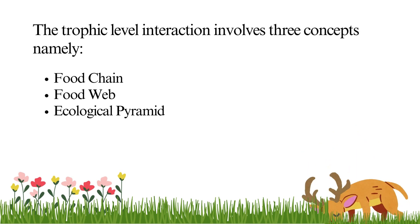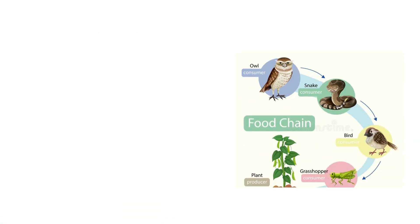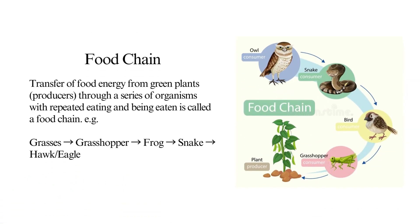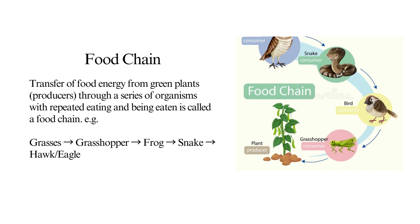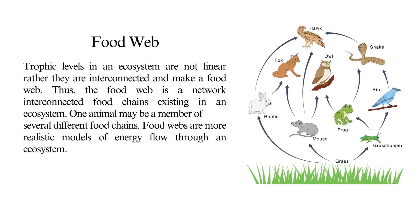The trophic level interaction involves three concepts: food chain, food web, and ecological pyramid. Food chain: transfer of food energy from green plants through a series of organisms with repeated eating and being eaten is called a food chain. For example, grasses are eaten by grasshopper, grasshopper is eaten by frog, the snake eats the frog, and finally snake is eaten by a hawk or eagle.